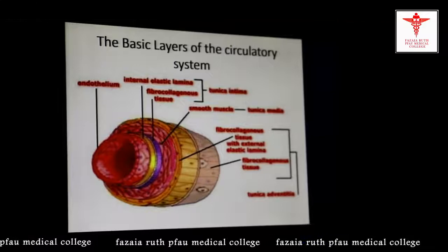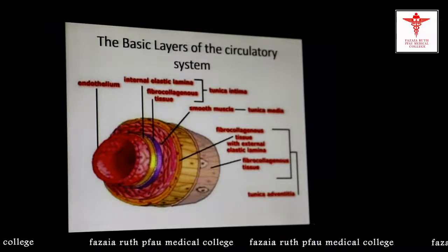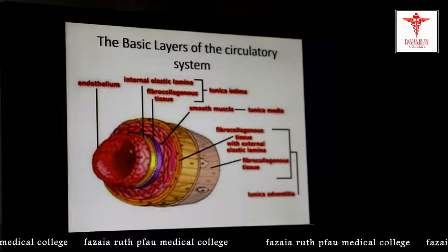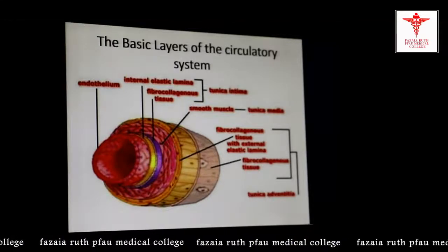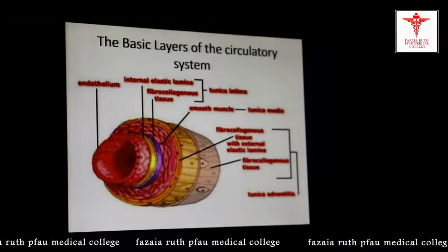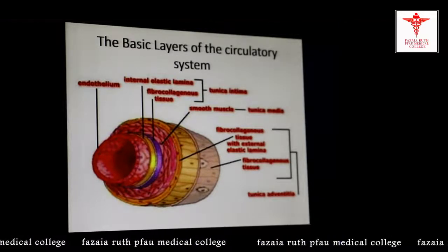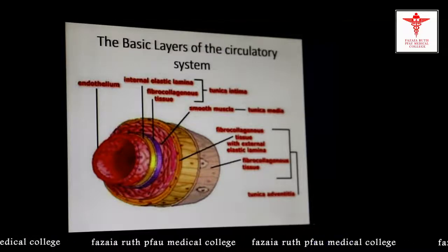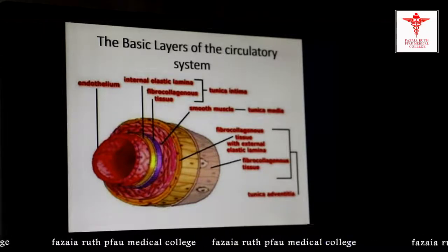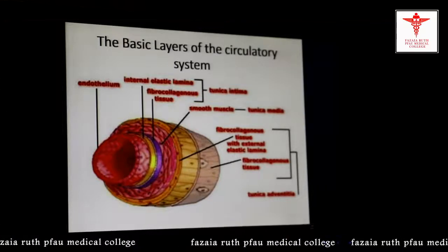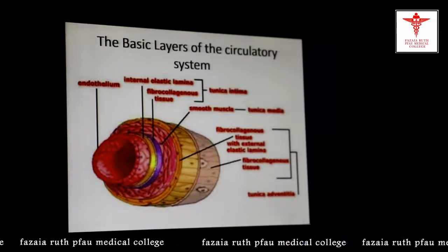In the tunica intima we see the endothelium, then the sub-endothelial layer consisting of collagen, elastic fiber, and connective tissue, and then there is the internal elastic lamina which separates the intima from the media. In the media there is smooth muscle fibers as well as elastic fibers. The media is separated from the adventitia by the external elastic lamina. Finally, the outermost layer, the adventitia, consists of collagen fibers and small vessels which supply blood to the vessel itself, known as vasa vasorum — meaning vessels of the vessels.